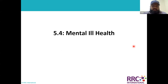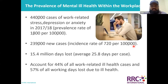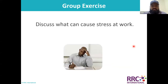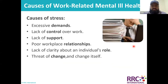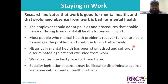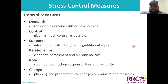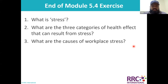Then our module 5.4 was about mental ill health, in which we discussed anxiety, depression, and work-related stress — how we get it and how to control it. Then we discussed the six control measures for stress and depression: demand, control, support, relationship, role, and change. After that there was an assignment.